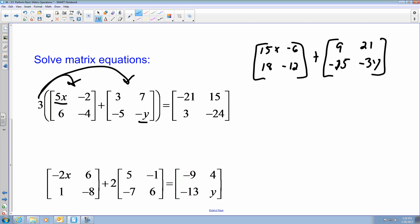So from here I want to solve for x. I can say that 15x plus 9 equals negative 21. Because it is the top left corner of this matrix added by the top left corner of that matrix equals the top left corner of my result. So when I subtract both sides by 9, I get 15x equals negative 30. Which leaves me with x equaling negative 2.